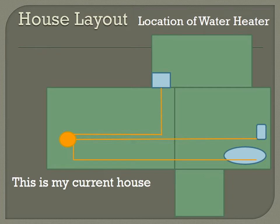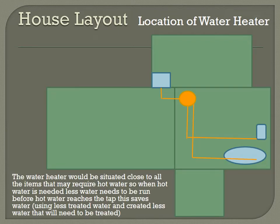This is not a slide I would use in the presentation, but it gives you an idea of what my house currently looks like. The water heater is the yellow circle on the left, the blue square at the top is my shower, the blue oval to the right is my bathtub, and the blue rectangle is the kitchen sink. Every time I need hot water at one of those places, I have to let the water run a couple of minutes before getting hot water, which means I waste a lot of water. A proper slide would show the house layout title, explain that the water heater is situated close to all items requiring hot water so less water needs to run before hot water reaches the tap — saving water and reducing the amount of water needing treatment.